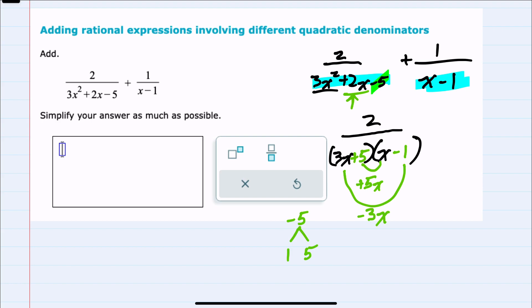We have factored this left-hand side and we can now look for a common denominator. The lowest common denominator between these two would have to have each one of these factors represented, so it will need a 3x plus 5 and also an x minus 1. Since the other fraction is just an x minus 1, we already have that. So this is our lowest common denominator.